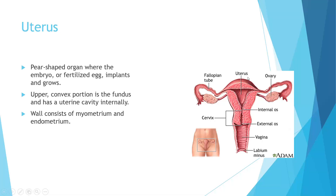If the egg does not implant, the lining sheds and that turns into what we know as the menstrual cycle. The fundus is this upper portion of the uterus — in a pregnant state you can actually palpate and feel it. In a non-pregnant state, we're typically not going to be able to palpate the fundus. The walls of the uterus have your myometrium and your endometrium.